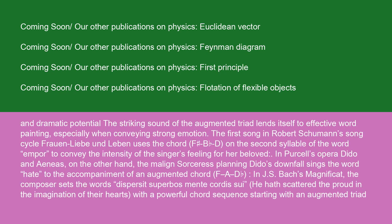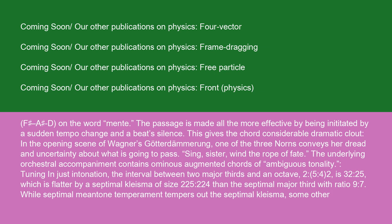The striking sound of the augmented triad lends itself to effective word painting, especially when conveying strong emotion. The first song in Robert Schumann's song cycle Frauenliebe und -leben uses the chord F#-B-D on the second syllable of the word Erkorenen to convey the intensity of the singer's feeling for her beloved. In Purcell's opera Dido and Aeneas, the maligned sorceress planning Dido's downfall sings the word 'hate' to the accompaniment of an augmented chord, F-A-D#. In J.S. Bach's Magnificat, the composer sets the words Dispersit superbos mente cordis sui — 'He has scattered the proud in the imagination of their hearts' — with a powerful chord sequence starting with an augmented triad, F-A-D#, on the word mente. The passage is made all the more effective by being initiated by a sudden tempo change and a beat's silence, giving the chord considerable dramatic clout.